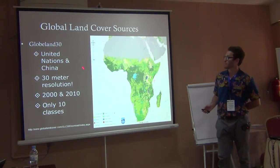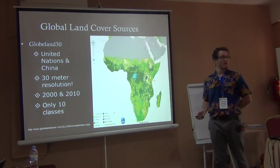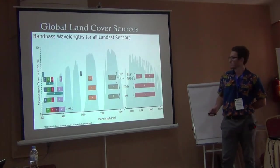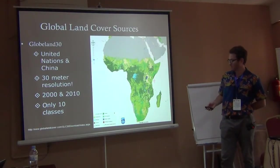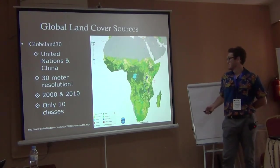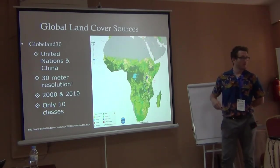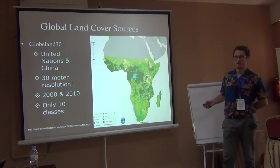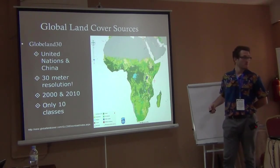A more recent one produced by the United Nations and China — Globeland30 — has a decent 30-meter resolution and two time periods, but only 10 classes. So you don't get a lot of flexibility. It's available and free, but I don't see a lot of people using it — maybe because western scientists prefer western satellites, or maybe the problem is the 10 classes, meaning you won't know differences between forest types or grassland types.